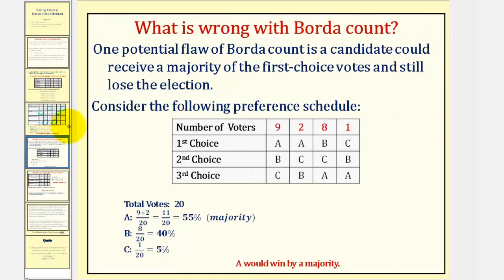Now, let's talk about the flaw, or what's wrong with the Borda Count method. One potential flaw of Borda Count is that a candidate could receive a majority of the first choice votes and still lose the election. To illustrate this, let's consider the following preference schedule. Notice in this election there are a total of twenty votes, and candidate A receives nine plus two, or eleven of the twenty votes, which would be fifty-five percent — a majority. Candidate B receives eight first choice votes, or forty percent, and candidate C only receives one, or five percent, of the first choice votes.